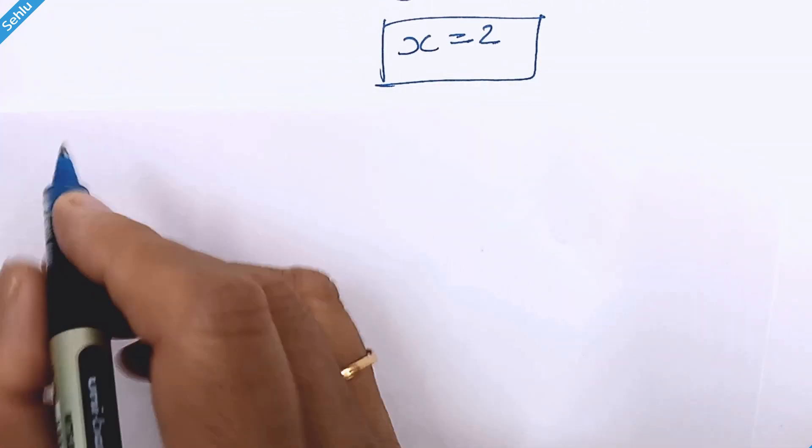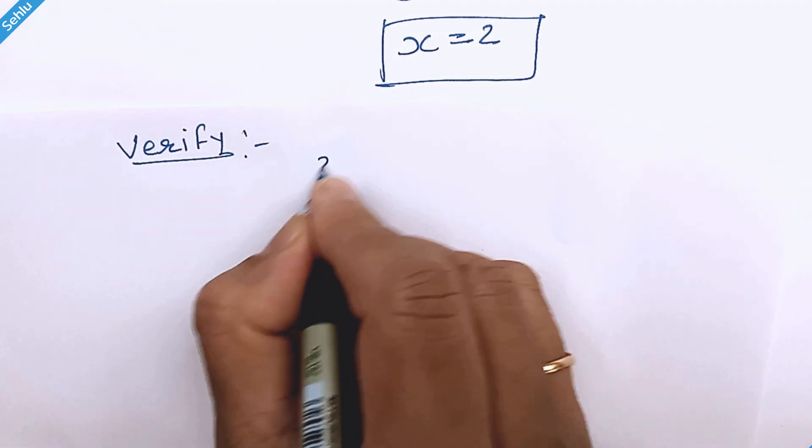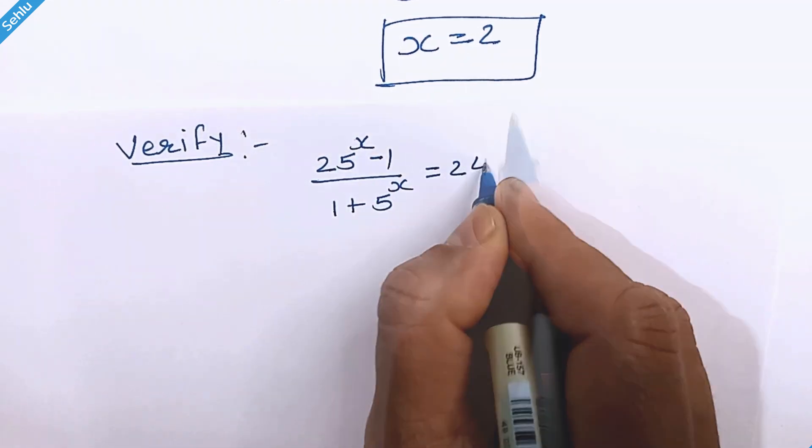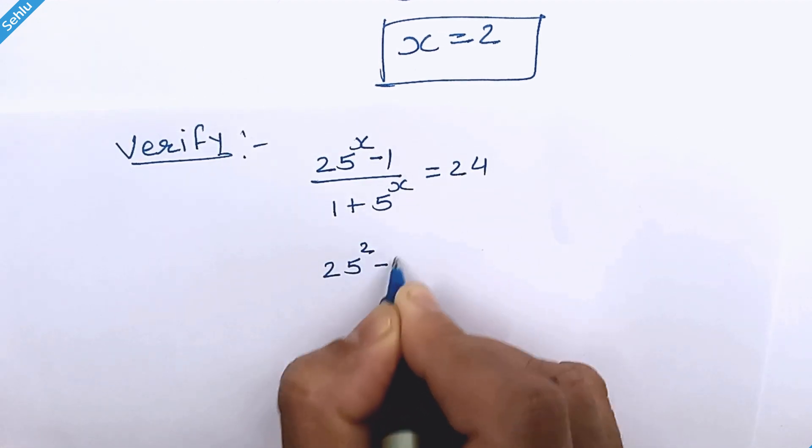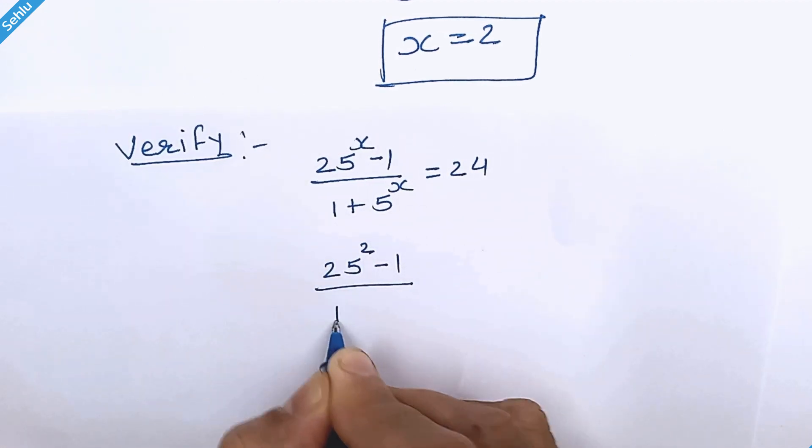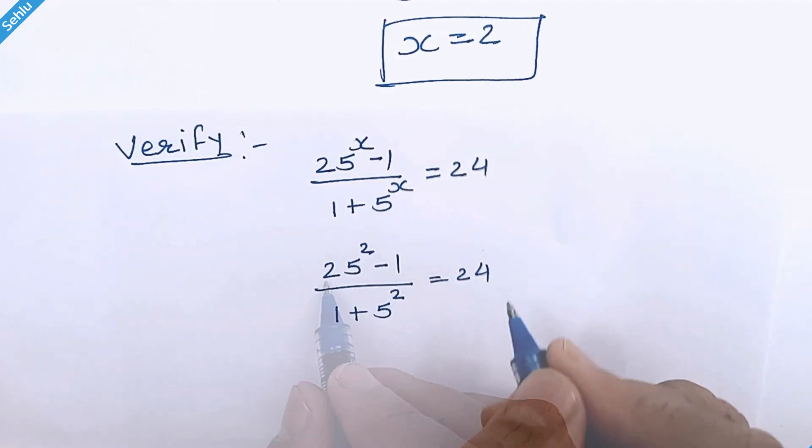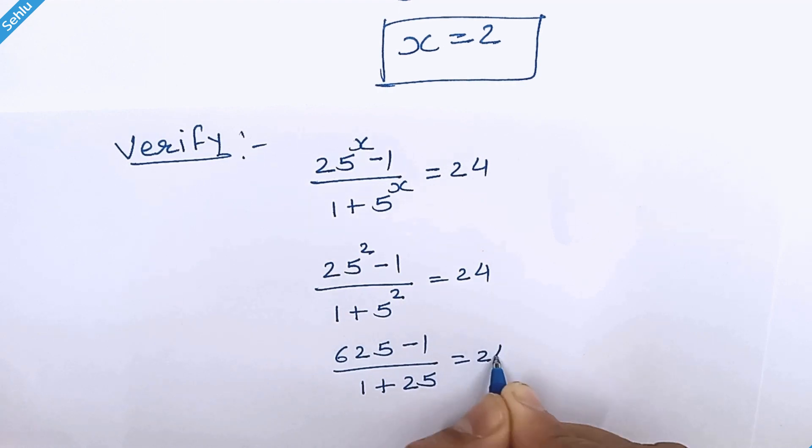Now let's verify our answer. Our given question is... Putting x is equal to 2, 25 square minus 1 over 1 plus 5 square is equal to 24. 25 square is 625 minus 1 over 1 plus 5 square is 25 is equal to 24.